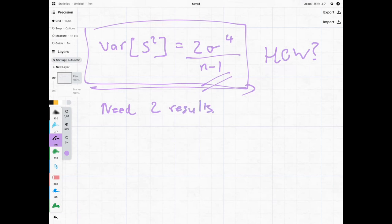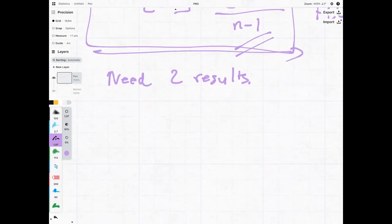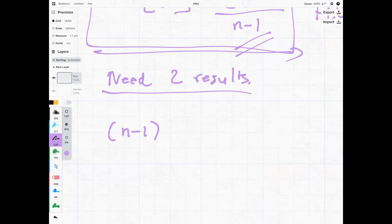The one result is that the sample variance and the sample mean are independent. This happens when we use a normal population or when we're sampling from a normal population. But what also happens is when we sample from a normal population we get the following result.